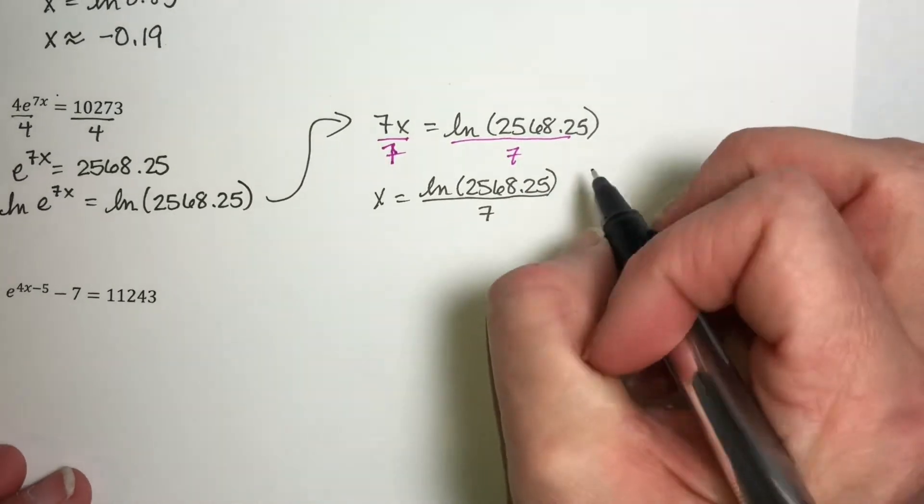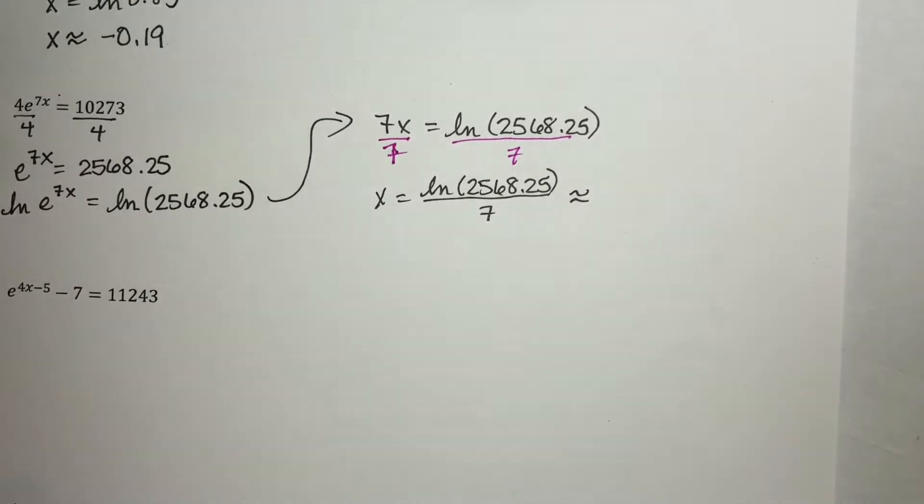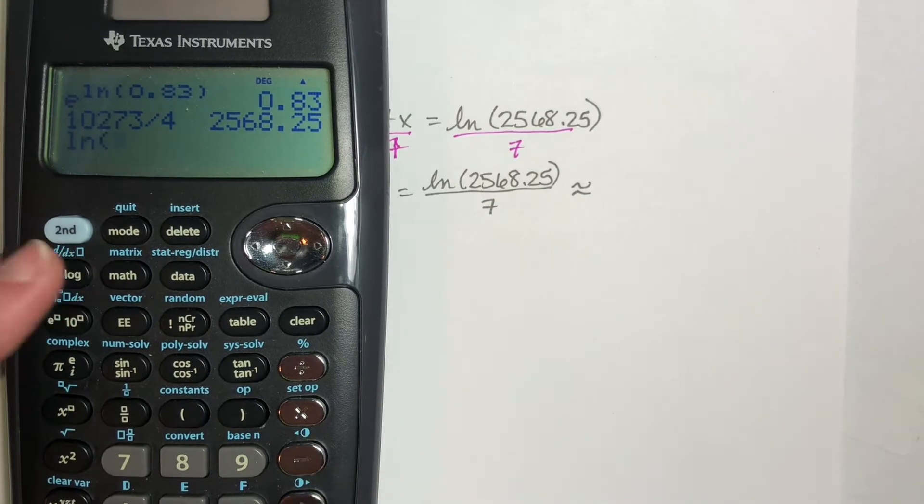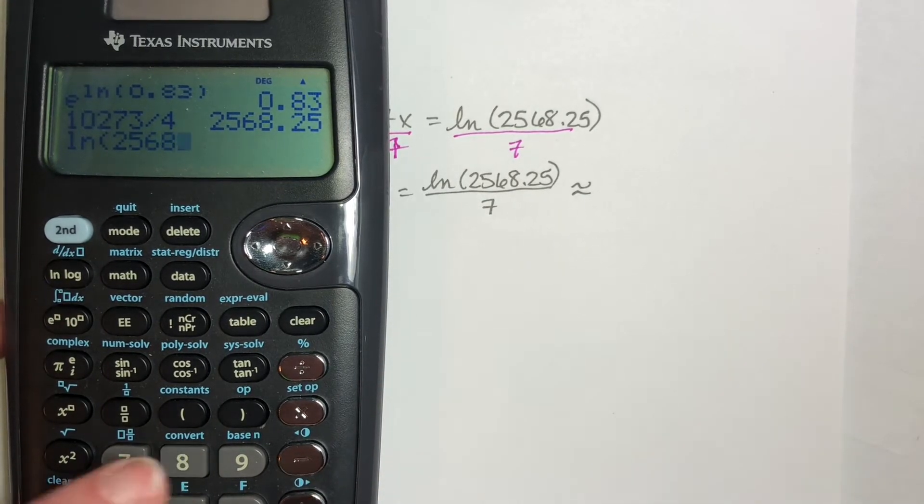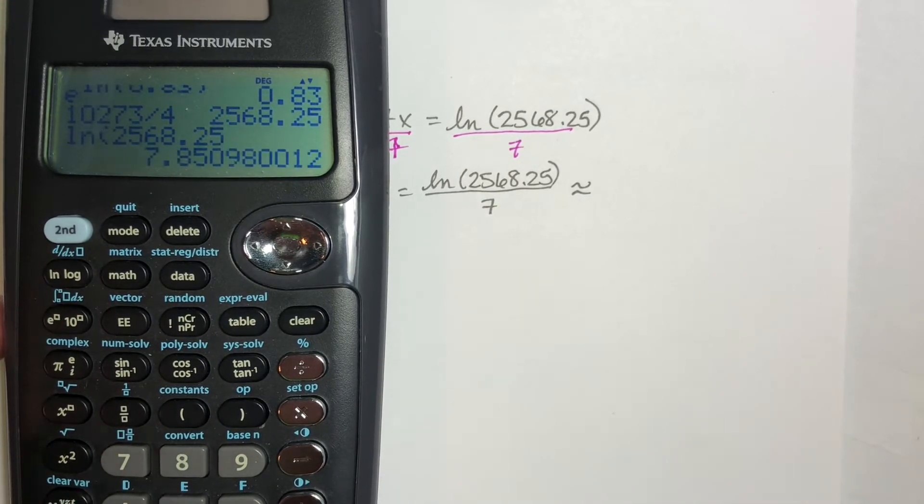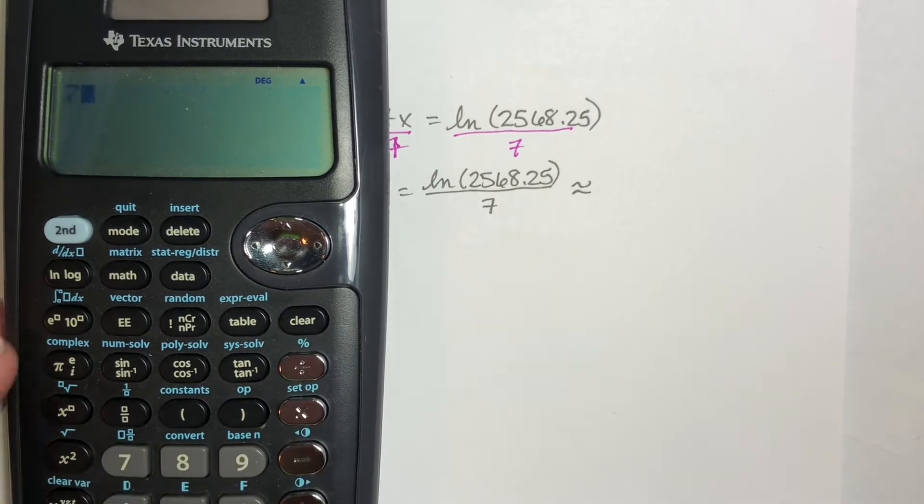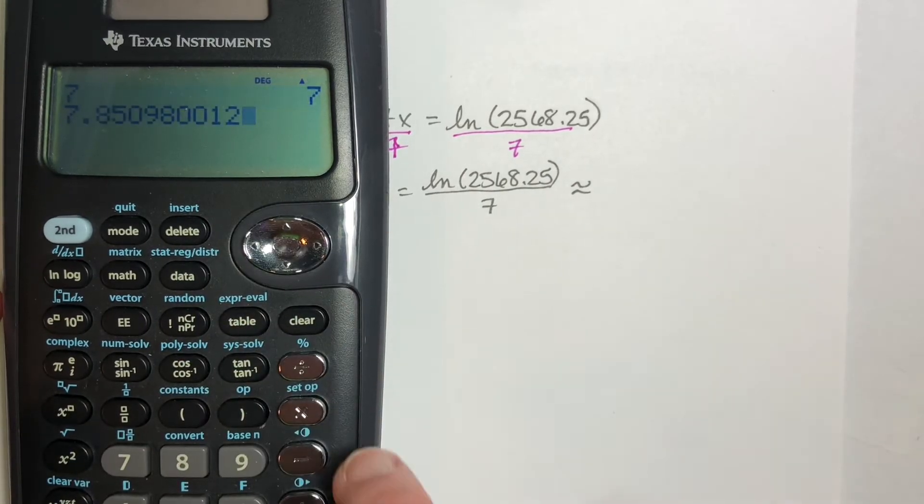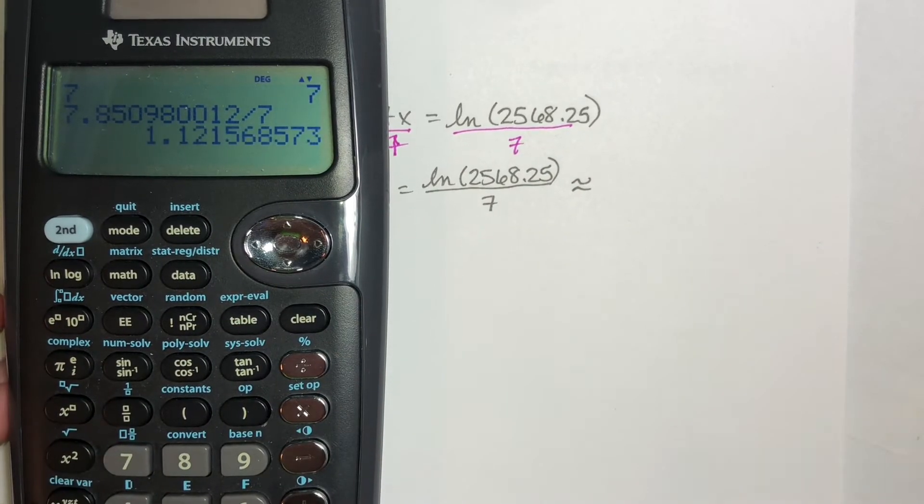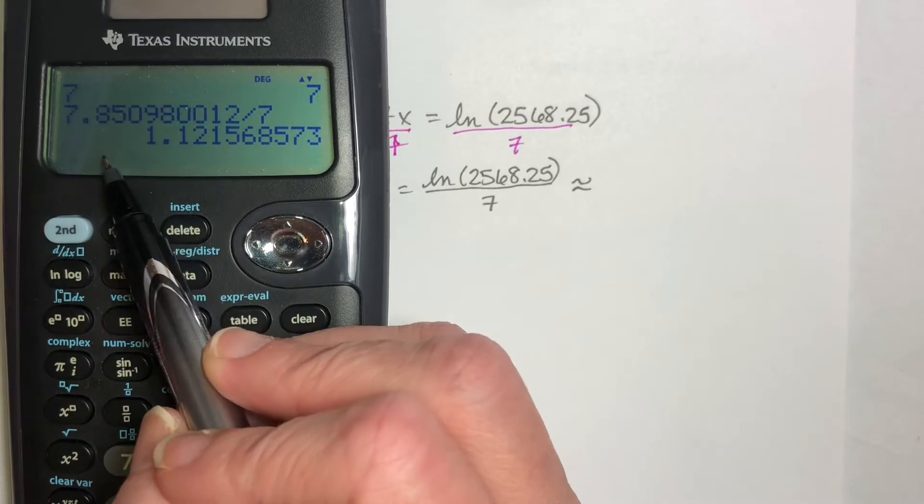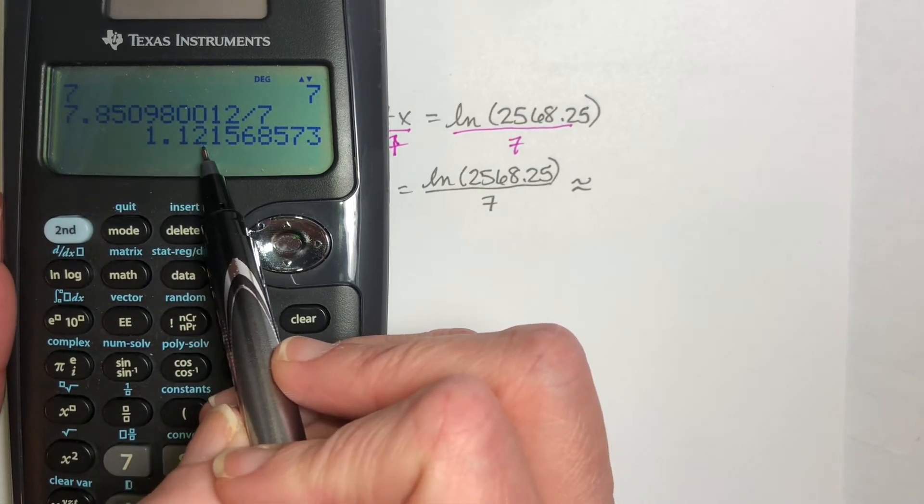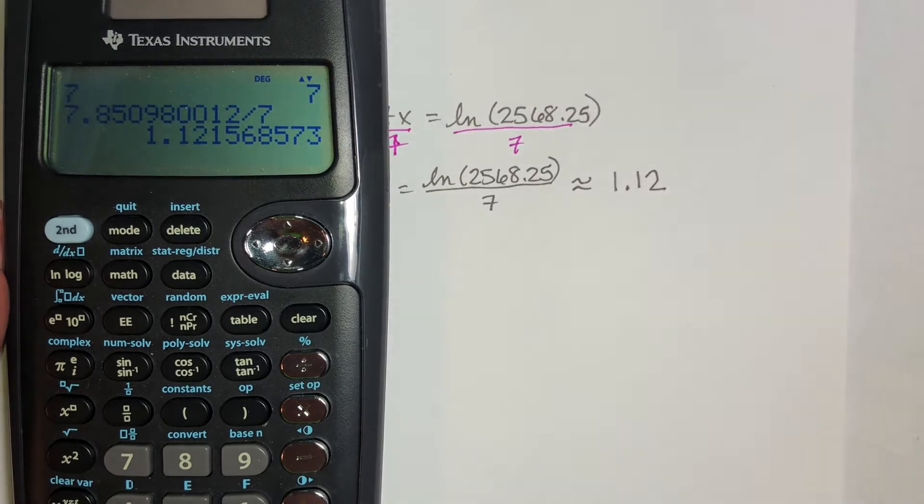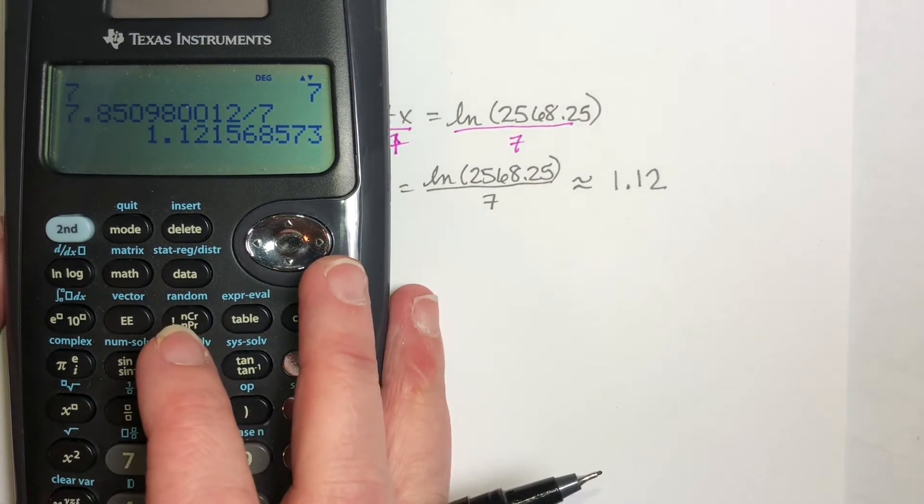We want this estimated to two decimal places. So I find natural log of 2568.25, and then I divide that answer by 7. We get 1.12. That's going to be 1.12. And that is that solution.